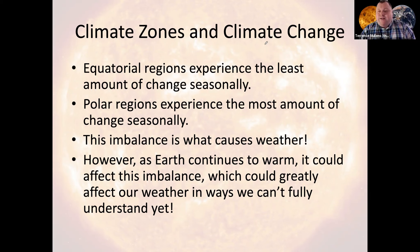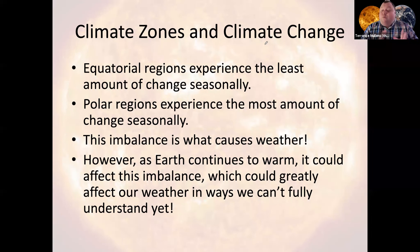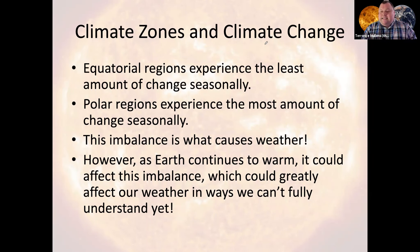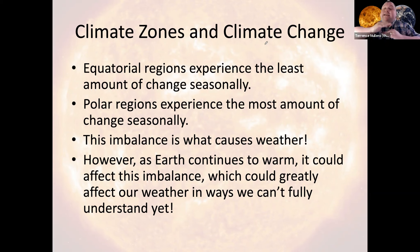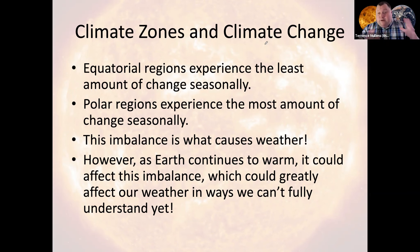As the Earth continues to warm, it is believed that polar regions are going to see the bulk of that warming. This could throw off the imbalance and greatly influence the kind of weather we get. One hypothesis is that we'll see a smaller temperature difference between the equator and the pole, resulting in fewer rainstorms, fewer blizzards, and less interesting weather specifically in the temperate regions.